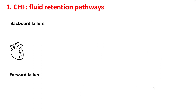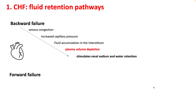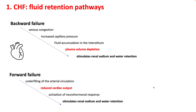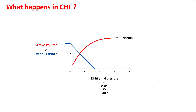In heart failure there are two types of failures: backward and forward. In backward failure there is venous congestion resulting in fluid accumulation in the interstitium, resulting in plasma volume depletion, stimulating sodium and water retention. In forward failure there is under-filling of arterial circulation because of reduced cardiac output, resulting in activation of neurohormonal responses and therefore sodium and water retention. This is the Frank-Starling curve.